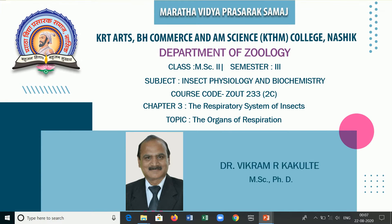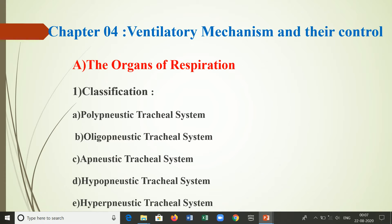Today we are going to study the respiratory system of insects. The exchange of gases is carried out by a complex tracheal system. The tracheal system is invaginated from the integument. In some types of dipterian larvae, the tracheal system is absent, and the integument serves the function of gas exchange.